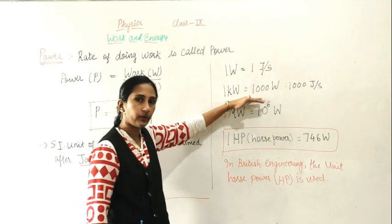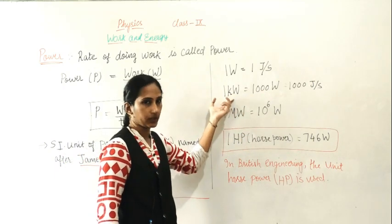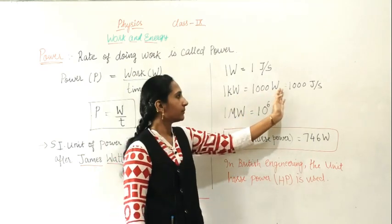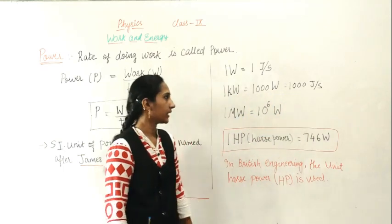Now what is 1 Kilowatt? Kilo means 1000, so 1 Kilowatt equals 1000 Watt. It may also be written as 1000 Joule per second.